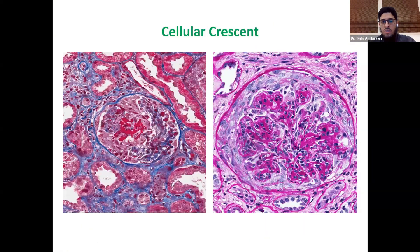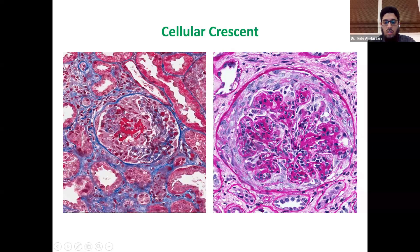This is an example of a cellular crescent. On the right side of the picture you can see a cellular crescent associated with endocapillary hypercellularity in the glomerular tuft. On the left side, this is a trichrome stain highlighting a cellular crescent with fibrinoid necrosis.